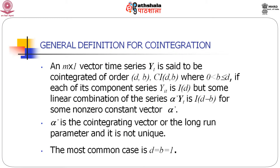Now for the general case, consider an m×1 vector time series y_t. The vector y_t is said to be co-integrated of order (d, b) where 0 < b ≤ d, if each component y_{it} is I(d), but some linear combination of the series y is I(d-b) for non-zero constant vector alpha. Alpha is the co-integrating vector or the long-run parameter and it is not unique. The most common case is where d = b = 1.